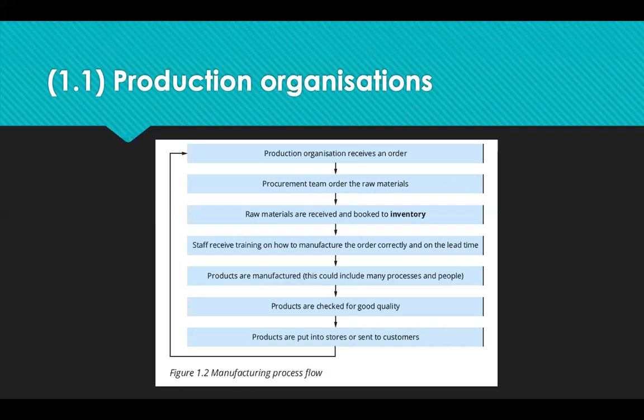Let's look at the workflow in a production organisation. They receive an order, then the procurement team orders the raw materials. Those raw materials are received and booked into the company's inventory. Staff receive training on how to manufacture the order correctly and to the desired lead time. Products are manufactured — this could include many processes and people — then checked to ensure they are good quality, before being put into stores or sent to customers.